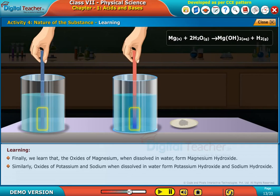Similarly, oxides of potassium and sodium, when dissolved in water, form potassium hydroxide and sodium hydroxide. All these are basic in nature. They would be soapy to touch.